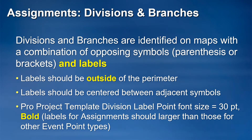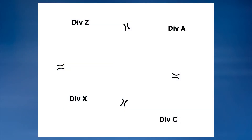Map labels for divisions and branches are essential, as line assignments are only identified on incident maps through a combination of symbols and labels. Assignment labels should be placed outside of the incident perimeter and centered between adjacent assignment break labels. The default font size of a division label within the NIFS label point feature is 30 points, but this can be adjusted up or down as needed. There is no division line or polygon feature to label, and the division breaks themselves aren't labeled — the assignment area is identified by placing the appropriate map label between the division break symbols.